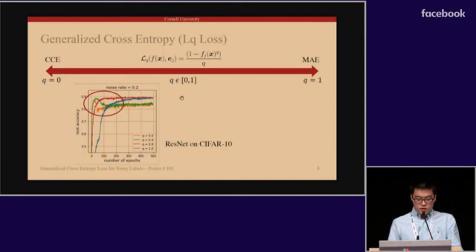However, larger q is not always preferred. To see this, we empirically examined the behavior of L_q loss with various values of q using ResNet on CIFAR-10 with manually injected noise. The curves show the plot of test accuracy against the number of epochs.